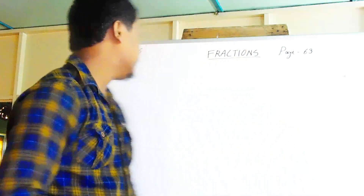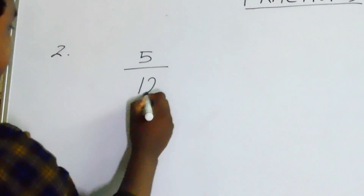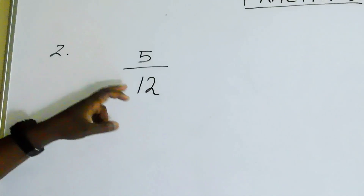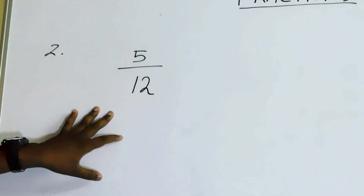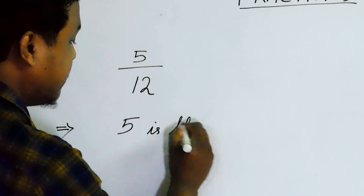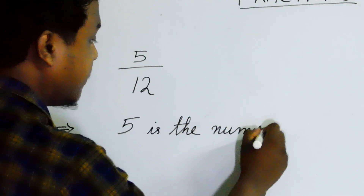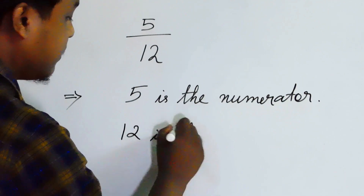Question number two: name the numerator and denominator in the fraction five by twelve. So this is a fraction and the question is asking you to identify the numerator and denominator. Like I've explained, the upper number is always the numerator and the lower number is always the denominator. So in your answer, write: five is the numerator, and twelve is the denominator.